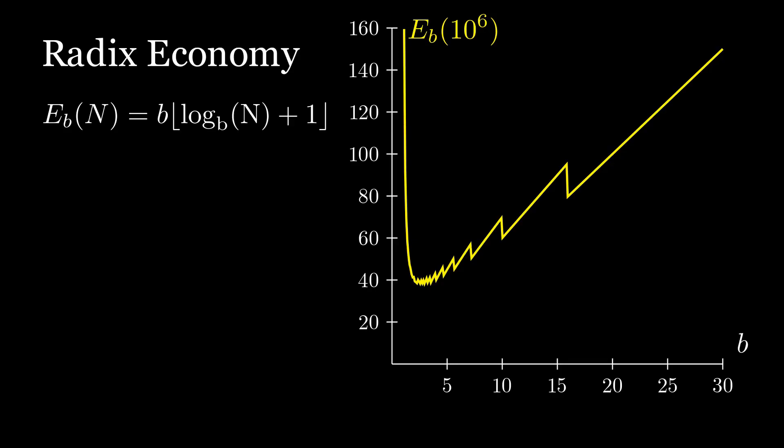But this still looks choppy, because it still jumps when the number of digits changes. Like when we go from base 10, which takes 7 digits to write a million, to base 11, which takes 6 digits.